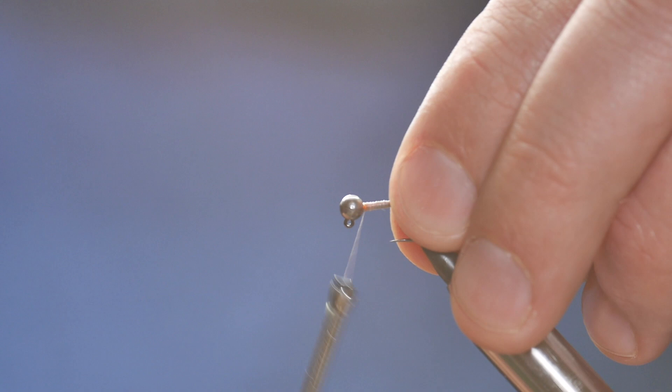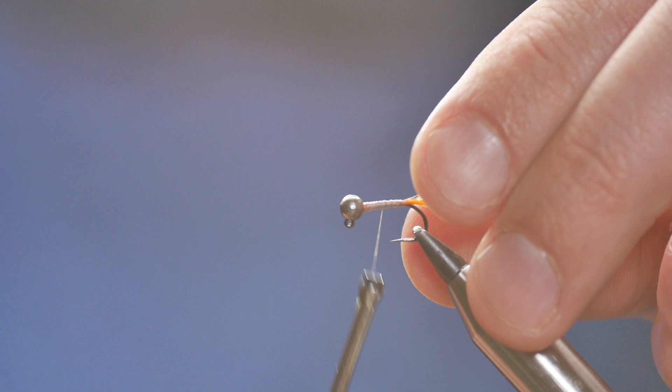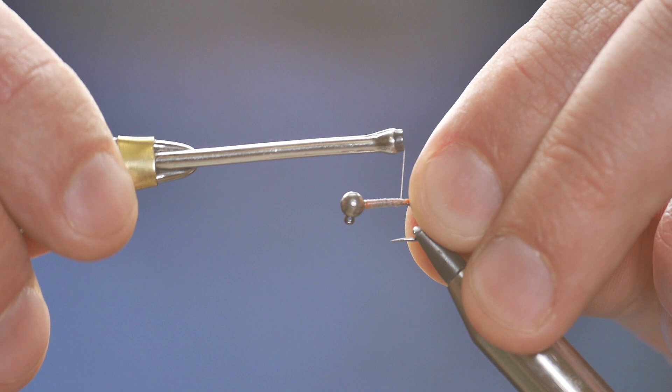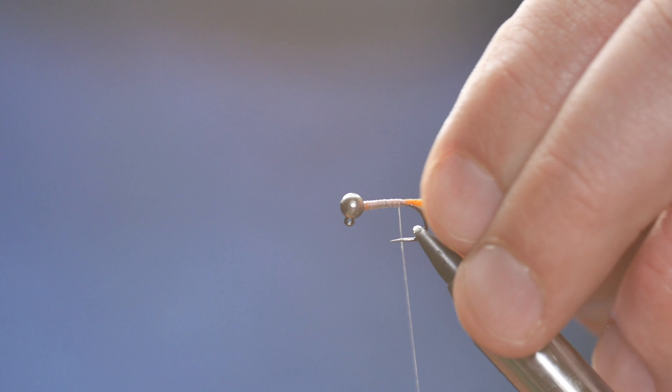Now as I said, when we fished with this on the Dee, it was generally in a smaller size and it was fished as a top dropper fly. We fished with a much heavier fly on the point. But even at size 14 I dare say this will be an effective fly.